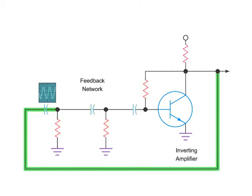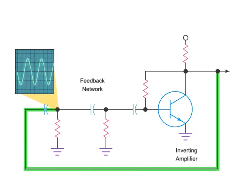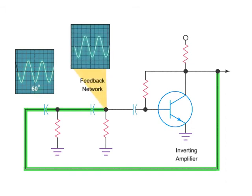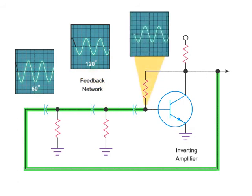Each of these capacitor and resistor units will shift the phase of the signal by 60 degrees. However, passing through each unit will also incrementally decrease the size of the signal. So, by the time the signal leaves the network, it will be 180 degrees out of phase and reduced in size.